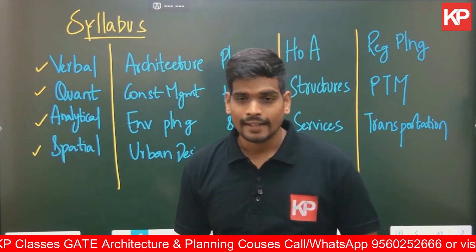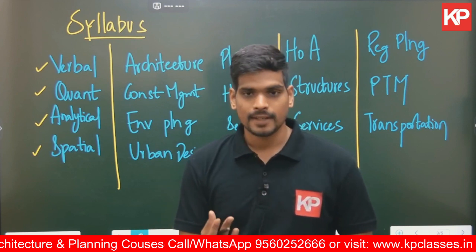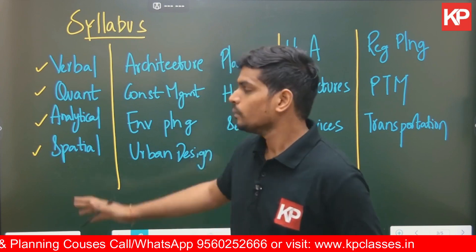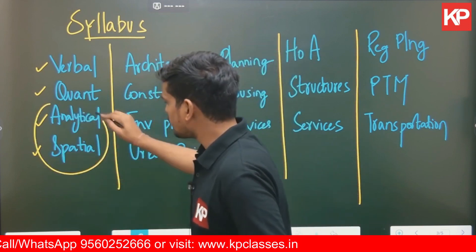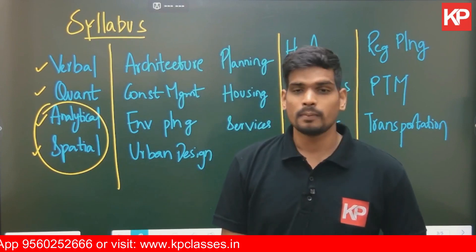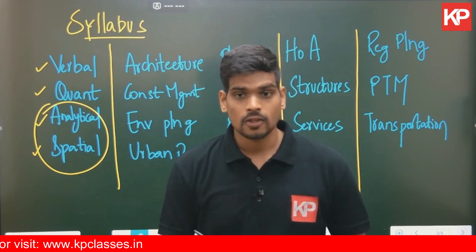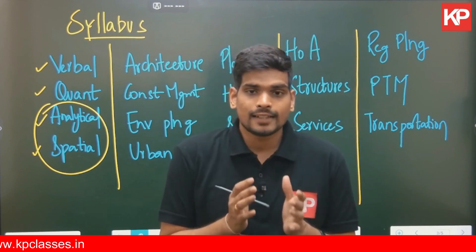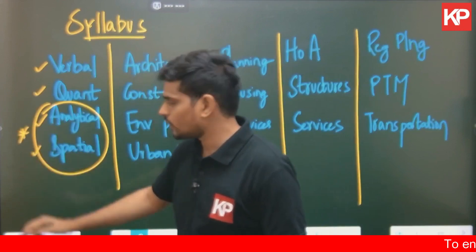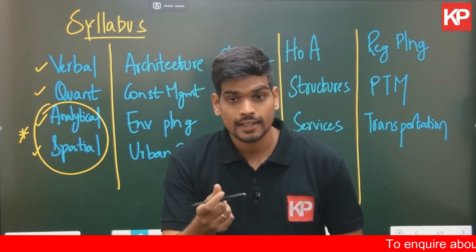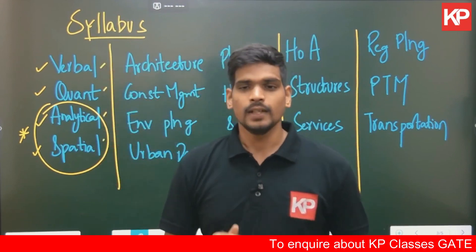Verbal ability covers basic English — simple questions, generally two to three questions. Quantitative ability has simple math-based questions, around one to three questions. Then one or two questions each from analytical reasoning and spatial reasoning. These two topics were recently added into the GATE pattern, probably in 2021. So don't just practice verbal and quant questions from past GATE papers — also emphasize the reasoning part introduced in 2021.